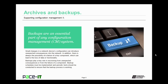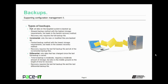Backup schedules must be implemented, and periodic tests should be conducted to ensure that the backup process is working. There's nothing worse than installing a backup and finding out that you really backed up nothing. There are three basic types of backups. There is the full backup — all data on the targeted system is backed up. This is the slowest backup method with the highest storage requirements, but it does lead to the fastest recovery method. When recovering using a full backup, it only requires the last full backup file.